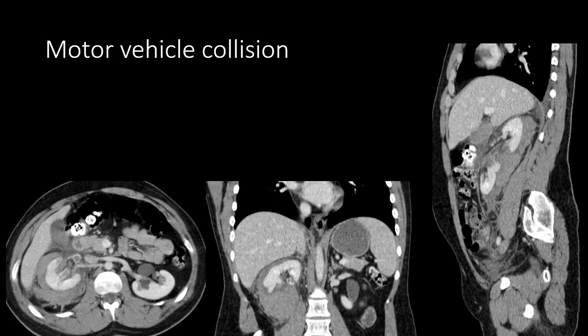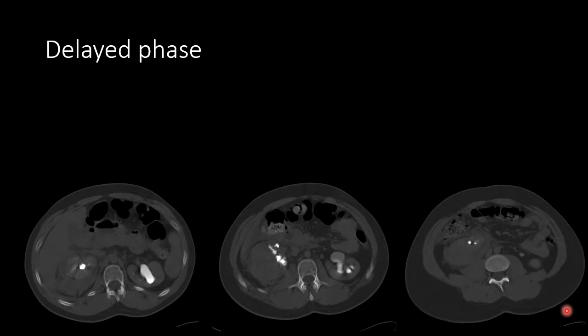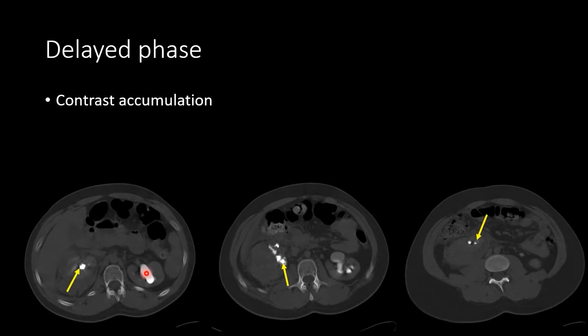In the second case, a patient involved in a motor vehicle collision had a perinephric hematoma along the kidney, along with a large laceration resulting in separation of the upper and lower poles of the kidney. The degree of injury was recognized on the initial CT, so the patient remained on the CT table for a 10-to-15-minute delayed phase. On this delayed phase, contrast is visible within the collecting systems, but multiple areas of hyperdensity outside the expected collecting system are also seen, consistent with a collecting system injury.